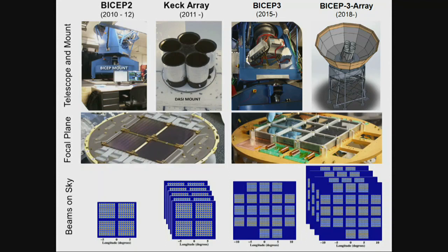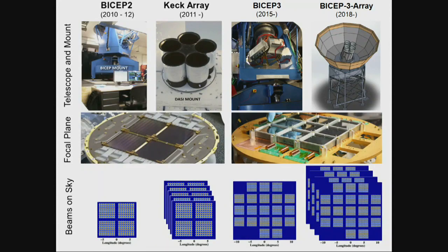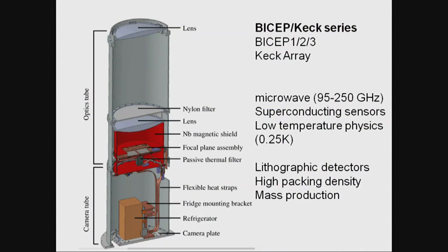BICEP3 is several times bigger than BICEP2 — they look similar in drawings but when you're building it you understand the challenge. BICEP3 has been observing since 2015; just these past few months we've fully populated the focal plane. We're moving to an array of BICEP3-like telescopes — we call it BICEP Array — starting hopefully in two years.